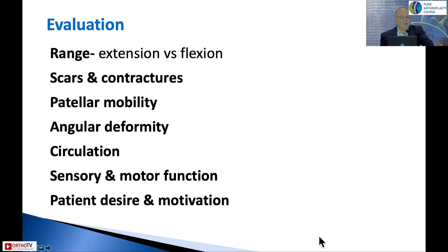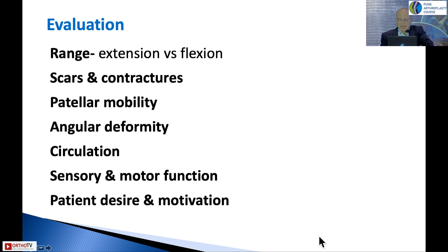When you evaluate, the first thing you'll see is the range. You need to assess whether it is stiff in extension or stiff in flexion, because your approach will depend on that. Then look for any scars and contractures. Look at the mobility of the patella — that will help you decide how much you need to mobilize. Check angular deformities, as that will also affect your releases. Look at the circulation; if it's compromised, it's better not to touch the knee at all.